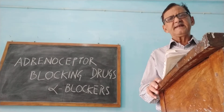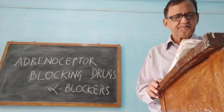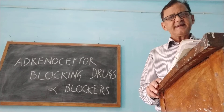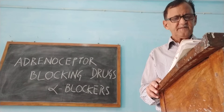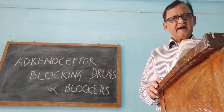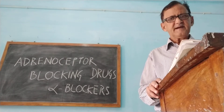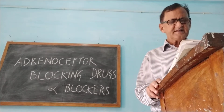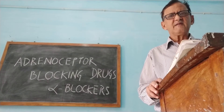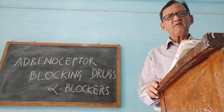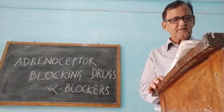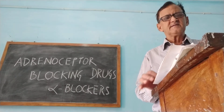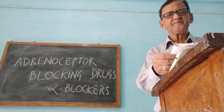The next group is selective alpha-1 blockers, which includes important drugs: prazosin, terazosin, doxazosin, tamsulosin, alfuzosin, and others. The third group is selective alpha-2 blockers, and in this group there is only one drug: yohimbine. You can find this classification in the book and study it.